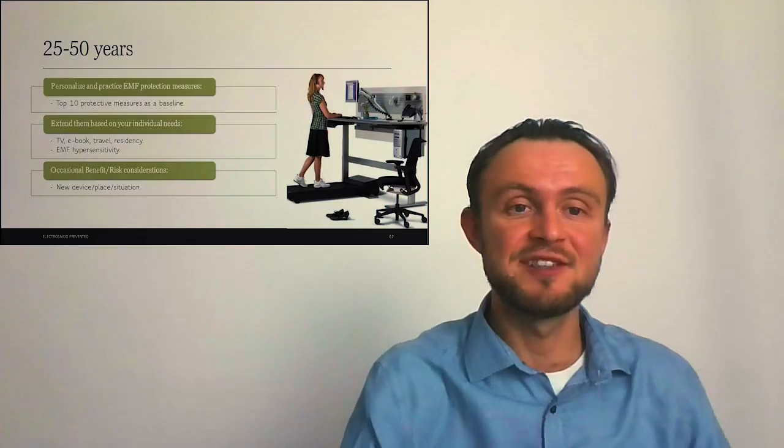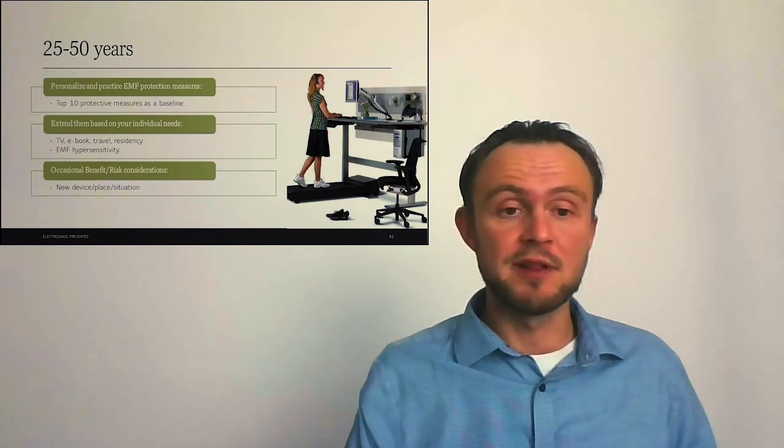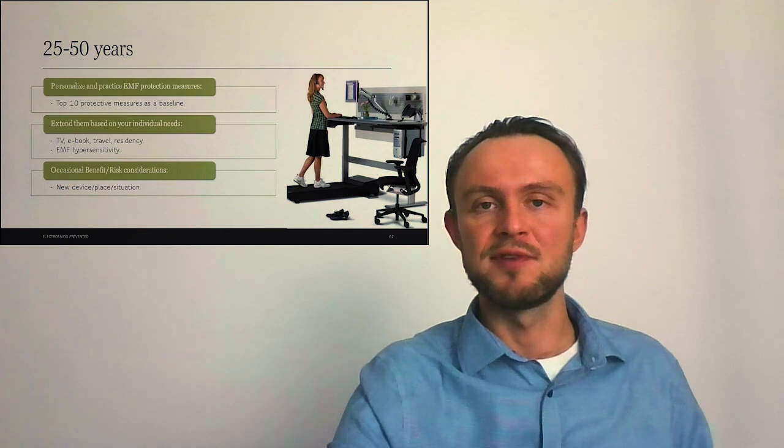During productive age, it's great to have personalized electromagnetic protective measures. Top 10 protective measures are great baselines and we can extend them based on our individual needs, if we use television or travel. And especially if we are sensitive to electromagnetic fields, this is the time where we can achieve most by lifestyle changes. Once we establish the protective measures that help us most and incorporate them into our daily routine, then we can consider benefit-risk only occasionally, when we have new devices or when we are in a new situation.